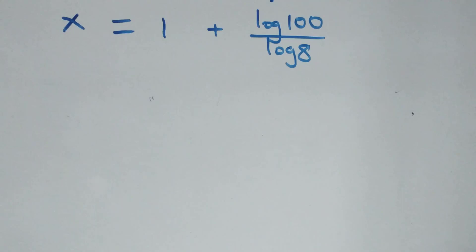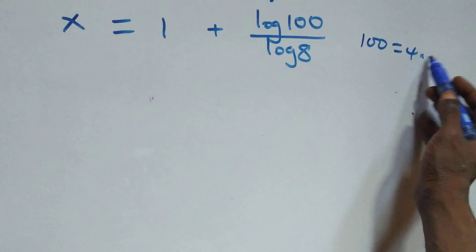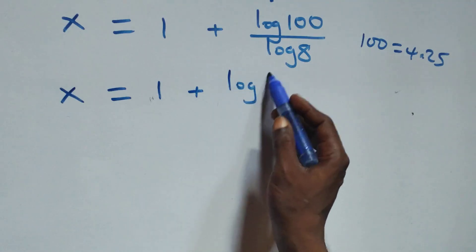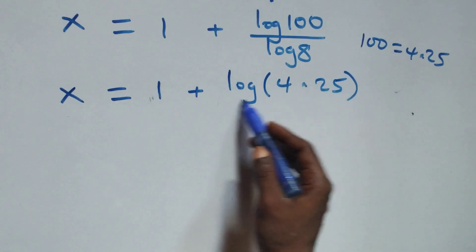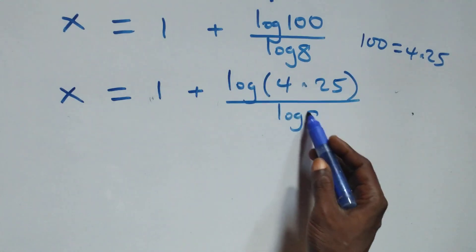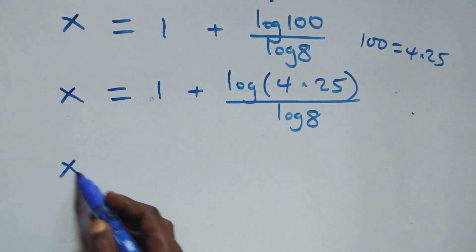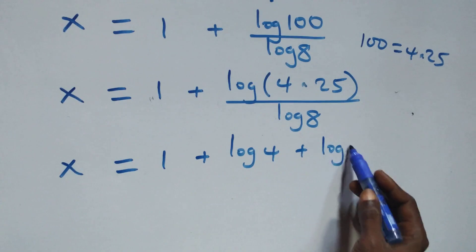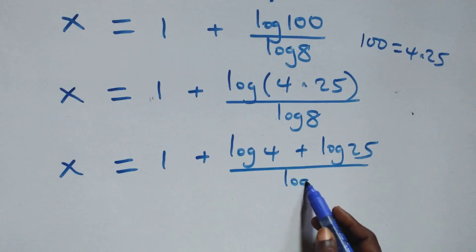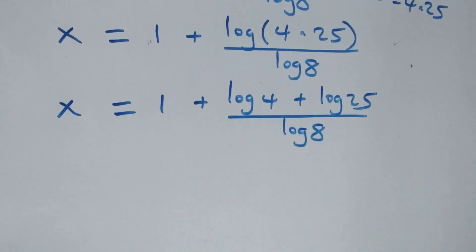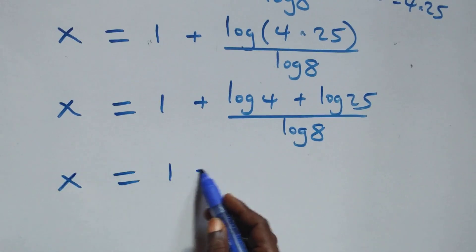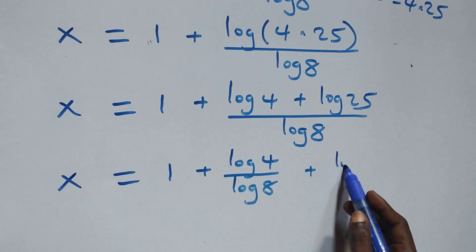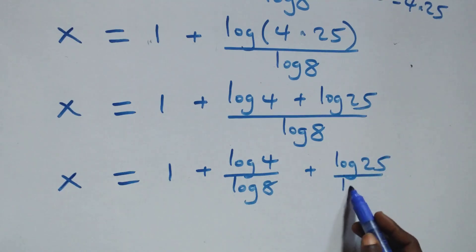The next step, we can write 100 as 4 times 25. So we have x equals to 1 plus log(4 × 25) over log 8. This follows the law of logarithm, and we have x equals to 1 plus (log 4 plus log 25) over log 8. We separate this into two fractions: x equals to 1 plus log 4 over log 8 plus log 25 over log 8.